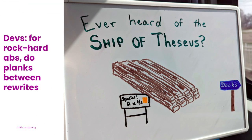Let's say that a ship leaves port for a long journey, and along the way some wooden boards break and the sailors repair the ship. The ship is away at sea for so long that eventually every board, plank, and mast has been replaced. When it returns to its home port, is it the same ship as when it departed?